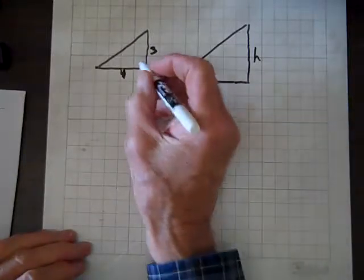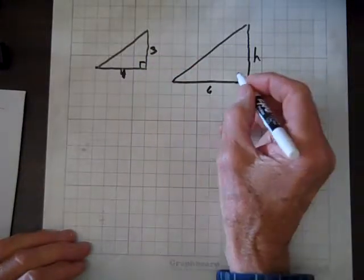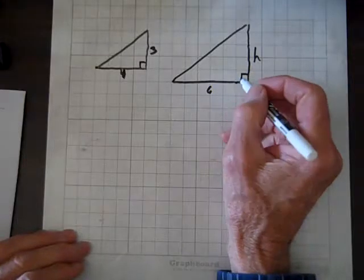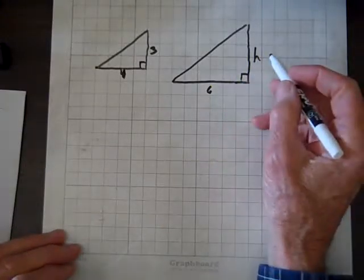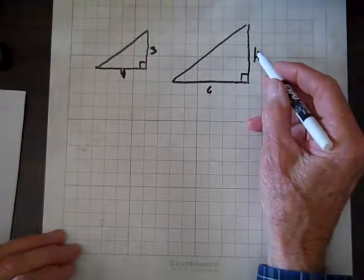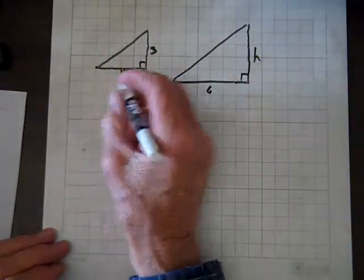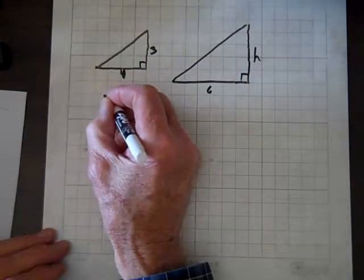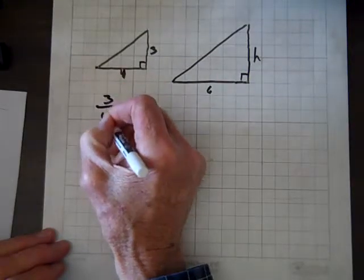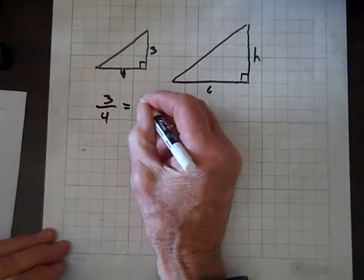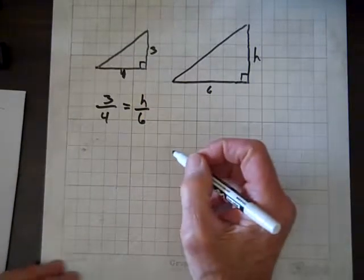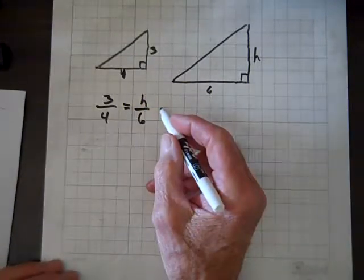So we have similar triangles here, and we'll set up a proportion and solve for H. So we know if these two triangles are similar, we know 3 over 4 equals H over 6. And our task is to find H.